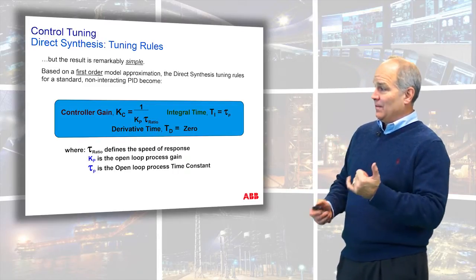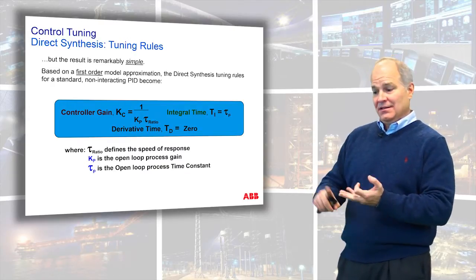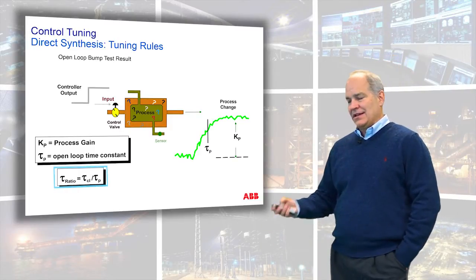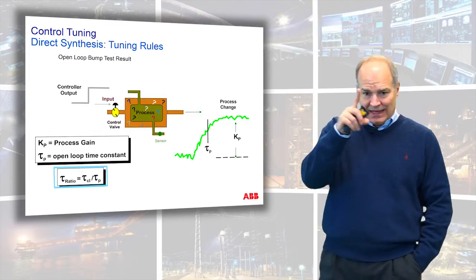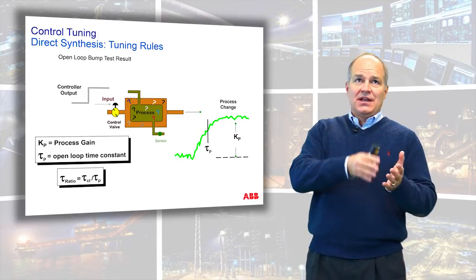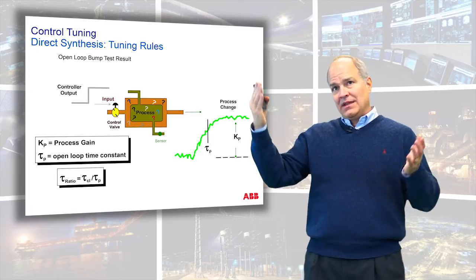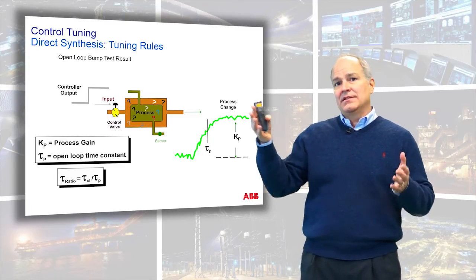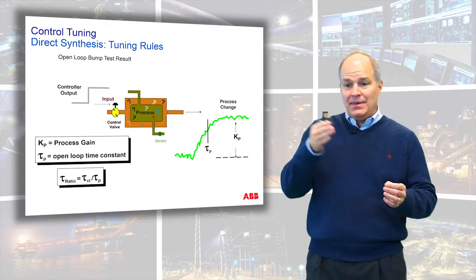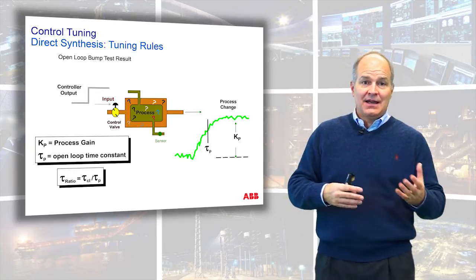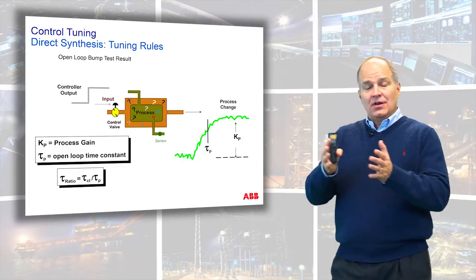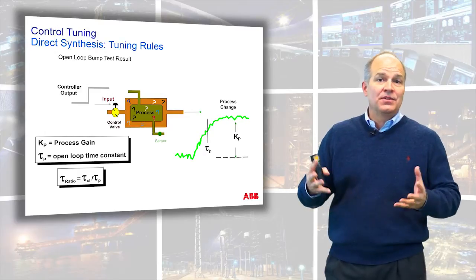In the simplest form, you calculate your process gain and your time constant, then pick the tau ratio. Tau ratio is a ratio of two time constants. Tau represents time constant. We're talking about the ratio of the closed-loop time constant — how long it takes to reach the set point in automatic — to the open-loop time constant. For example, if it takes four minutes to reach the set point in automatic but only one minute in open loop, the tau ratio is four. Literally, tau ratio is defined as how much slower than the process dynamics you want the controller to run.